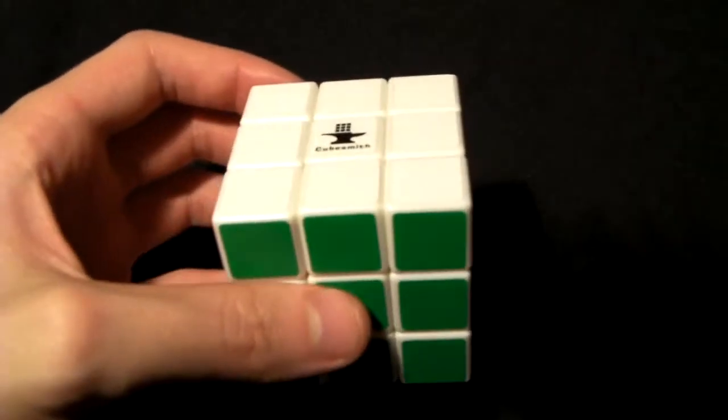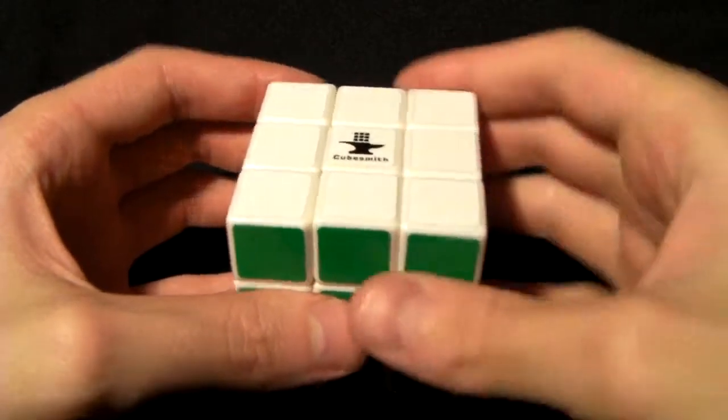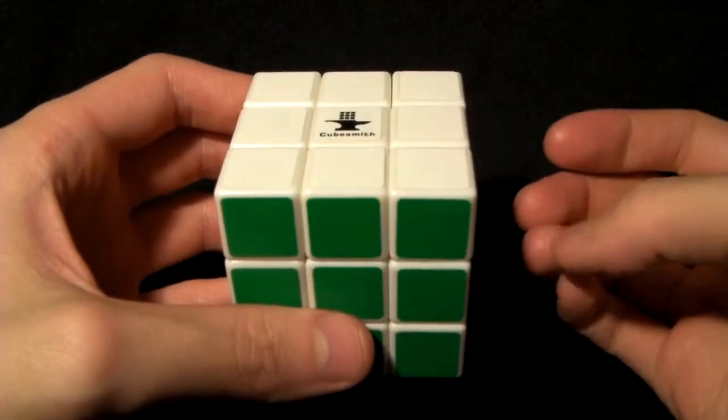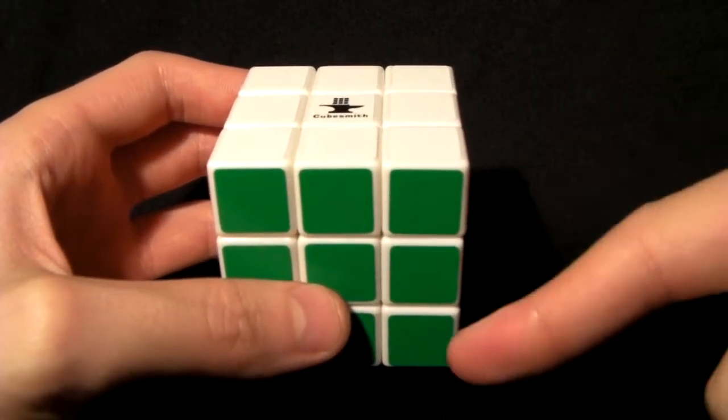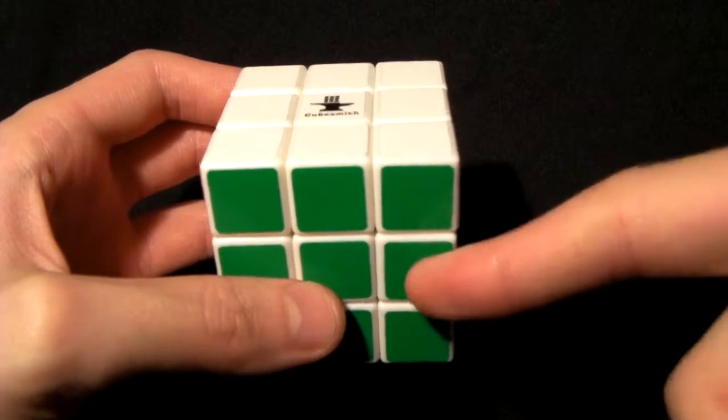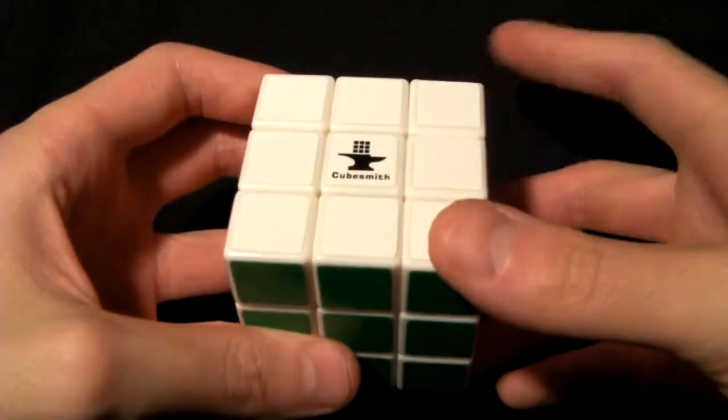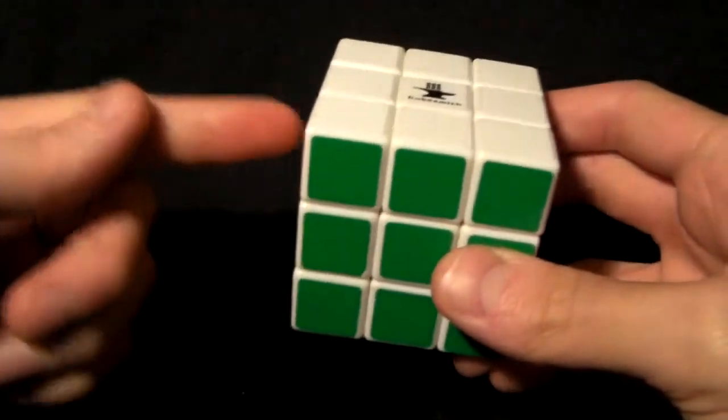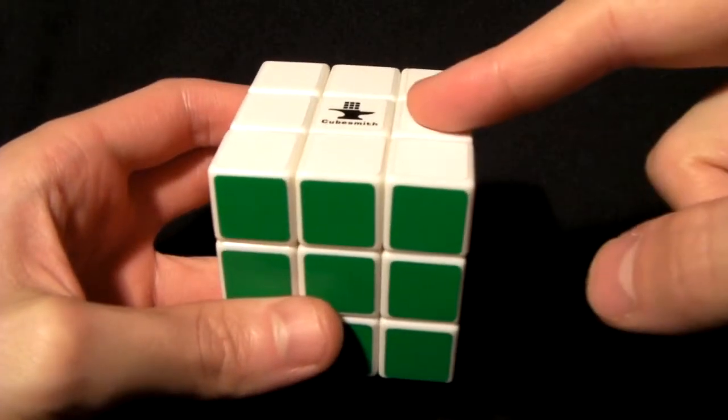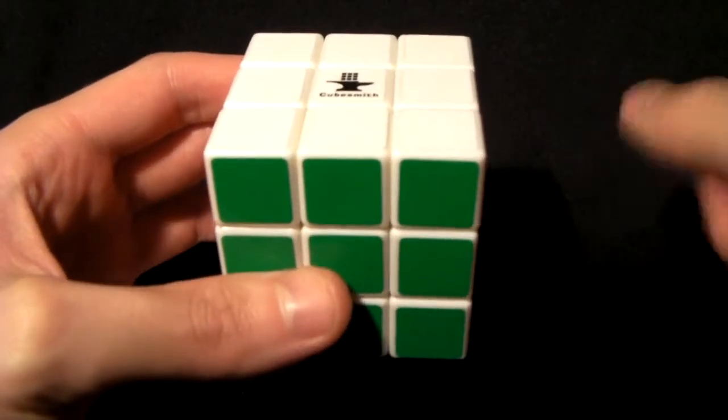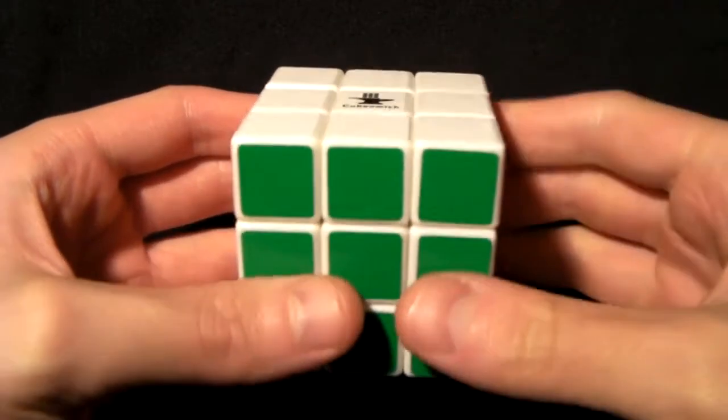We're going to start off with single layer notation, and that's really simple. The layers are designated by a single letter that describes the side: F for front, B for back, L for left, R for right, U for up, and D for down.